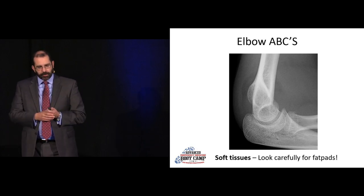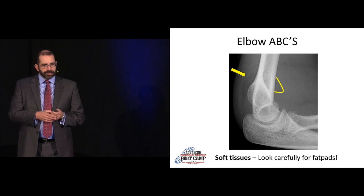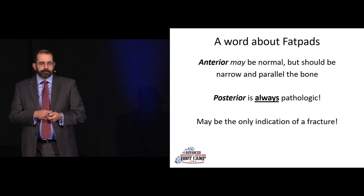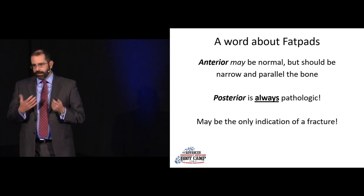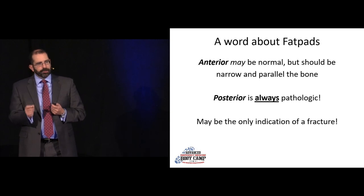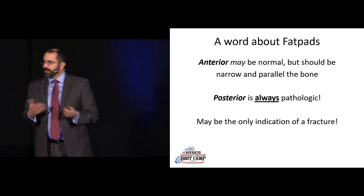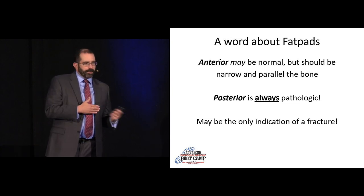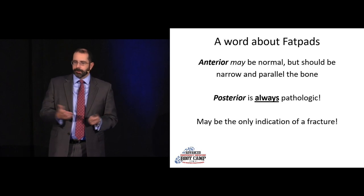Fat pads: there's a nice posterior fat pad and a big anterior sail sign — both are pathologic. Just like in kids, adults can have a normal anterior fat pad, but it should be very narrow and hug the bone. Once it splays out into that sail shape, it becomes pathologic. A posterior fat pad is always pathologic — P for posterior, P for pathologic — that's how I remember it.